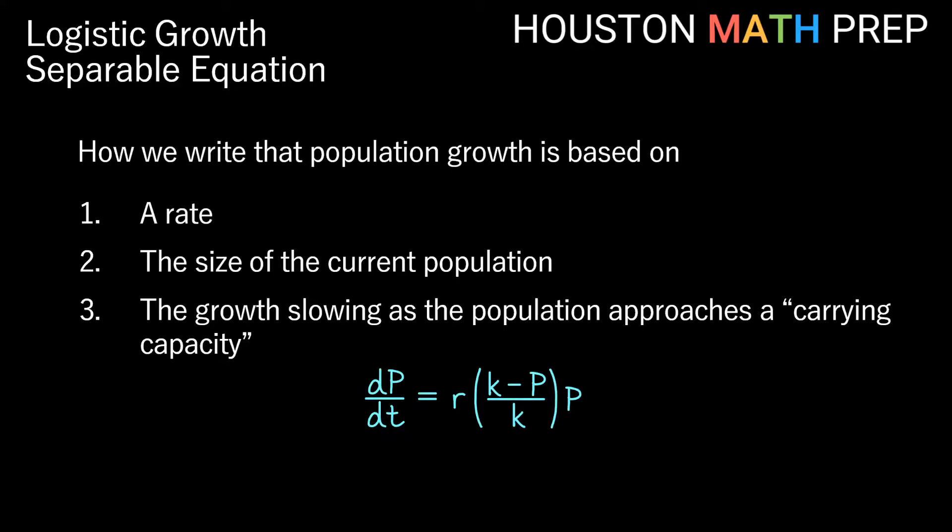So how we write that population growth is based on first of all a rate, also based on the size of population that you have currently, and then also on the growth slowing as we reach some sort of a limiting value, what we call a carrying capacity.